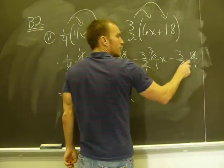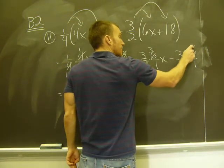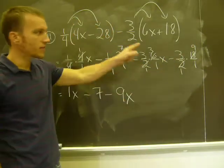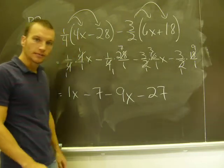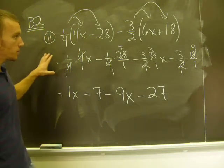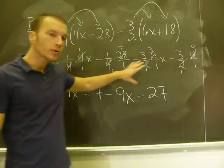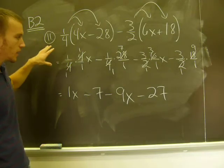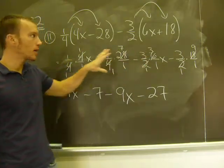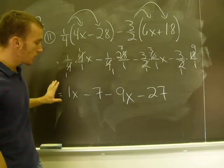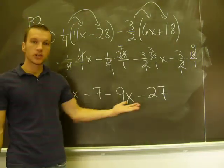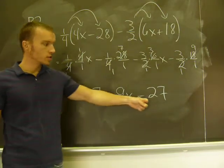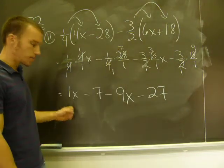And then my last multiplication step will be three halves times eighteen. Two into two once, two into eighteen nine times. These will be negative three times nine, negative twenty-seven. So that's a bit messy, but we had to work with those fractions. But once we did that, in this case fortunately, I don't have fractions anymore. When I multiply these fractions by these numbers as fractions in this example, they all went away. Now I'm left with integers to combine and integer coefficients to combine.